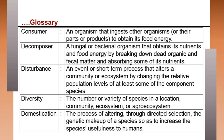A consumer is an organism that ingests other organisms or their parts or products to obtain food energy. A decomposer is a fungal or bacterial organism that obtains its nutrients and food energy by breaking down dead organic and faecal matter and absorbing some of its nutrients. Decomposers are very useful in any ecosystem, particularly in agroecosystems.